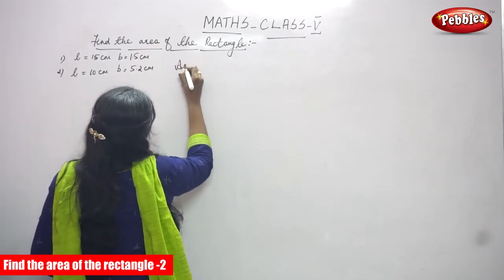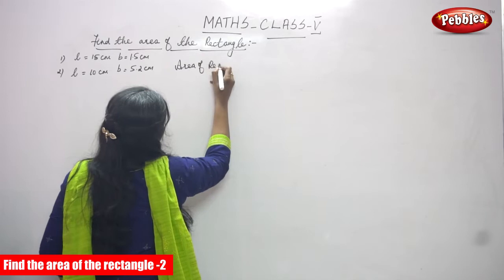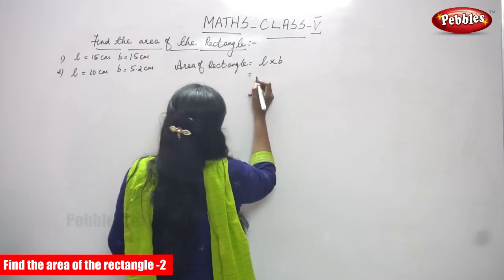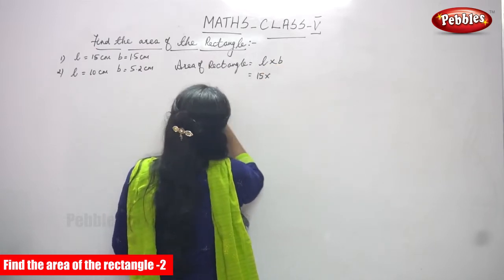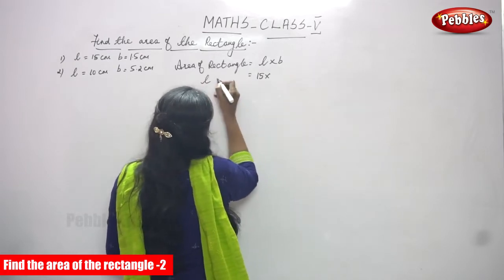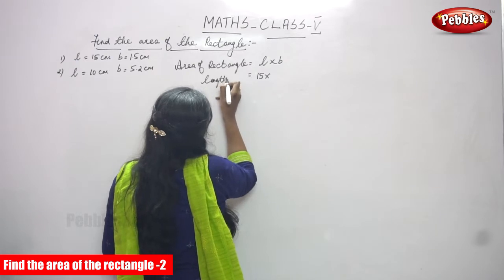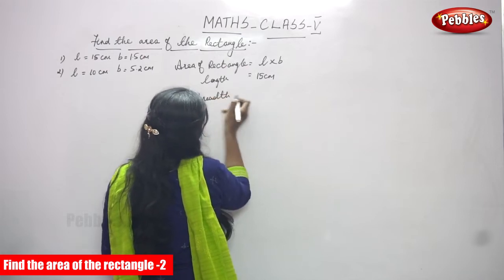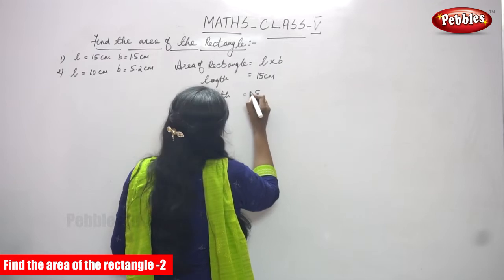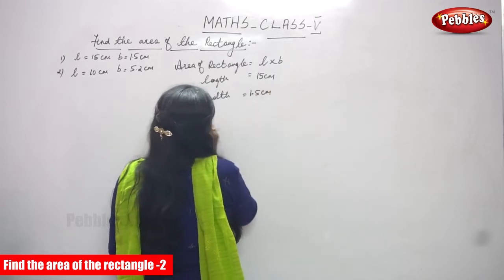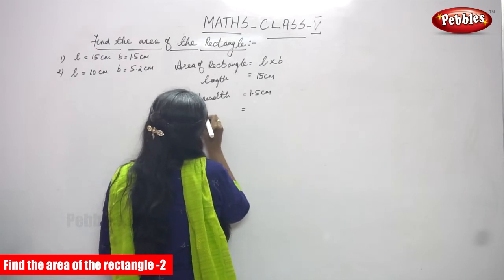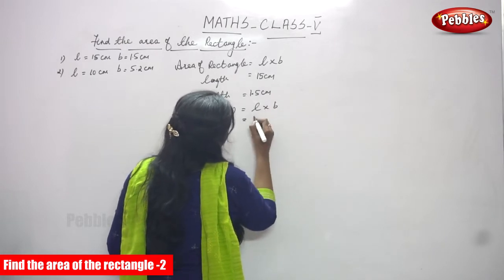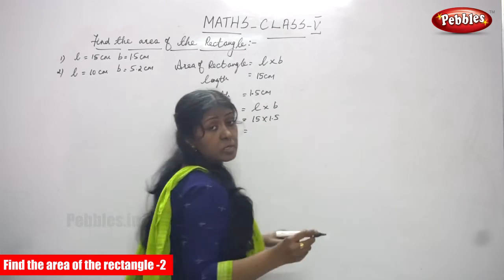Let's start the sum. The formula for area of a rectangle is A = L into B, that means length into breadth. Here, length L is equal to 15 centimeters and breadth B is equal to 1.5 centimeters. So we have to multiply 15 into 1.5.